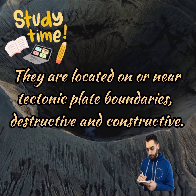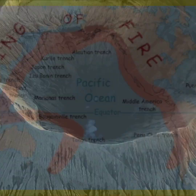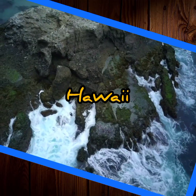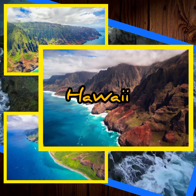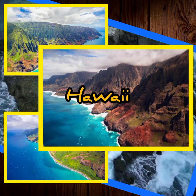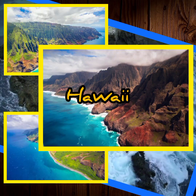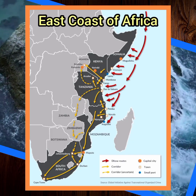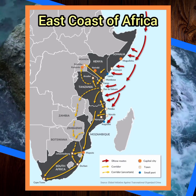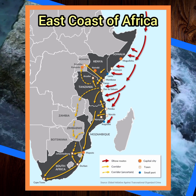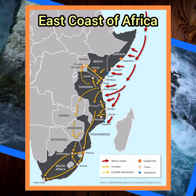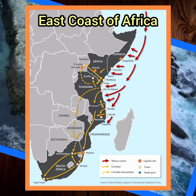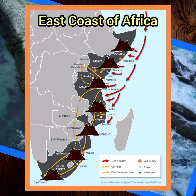There are a few exceptions, such as volcanoes in the middle of the Pacific Ocean, notably on the islands of Hawaii. These volcanoes are caused by hot spots. The East Coast of Africa is also not a plate boundary, but rather the African plate ripping itself in half, creating a rift valley lined with volcanoes.